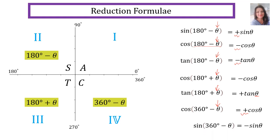Sin(360° − θ) is minus sin theta. The angle reduces to the acute angle. It is negative sin theta because 360 minus theta is cos's quadrant, not sin's quadrant — so sin is negative in that quadrant.